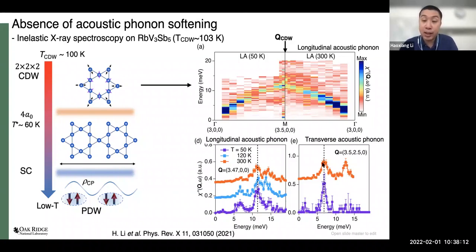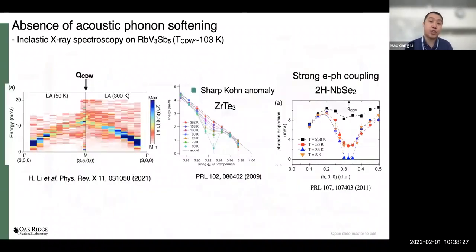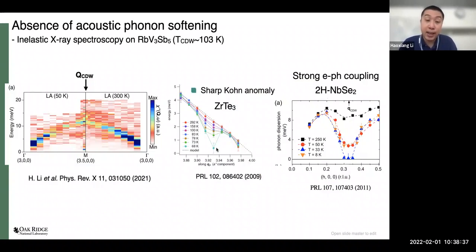This surprising result directly rules out the possibility of strong electron-phonon coupling and also rules out a Kohn anomaly in these materials. This unchanged acoustic phonon can also be found for the transverse acoustic mode and multiple temperature scales in the longitudinal acoustic mode in other directions. This is a stark contrast to previous understanding of conventional CDW materials like chromium tritelluride or niobium diselenide, where phonon softening can be clearly observed in x-ray spectra.